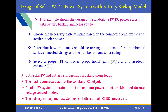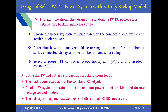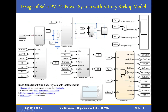The example shows the design of a solar PV DC power system with battery backup and helps you choose the necessary battery rating based on the connected load profile and available solar power. You can set the solar irradiance value here. It also helps determine how panels should be arranged — number of series strings and number of panels per string. The next step is to select a proper PI controller with proportional gain KV and integration constant TV. Both solar PV and battery storage support standalone loads. The battery management system uses a bi-directional DC-to-DC converter.